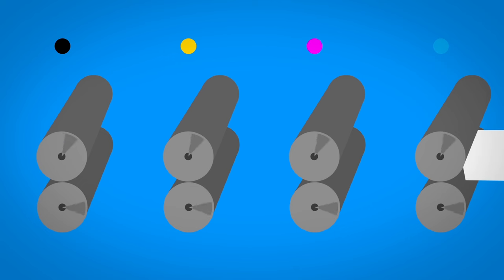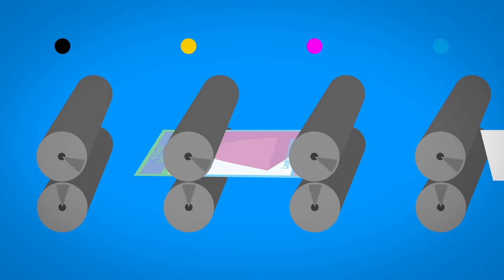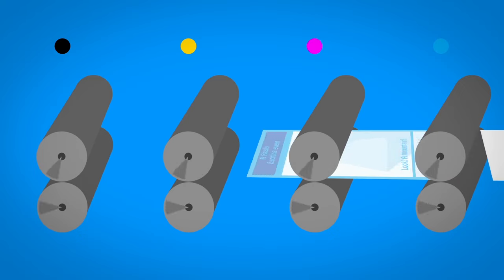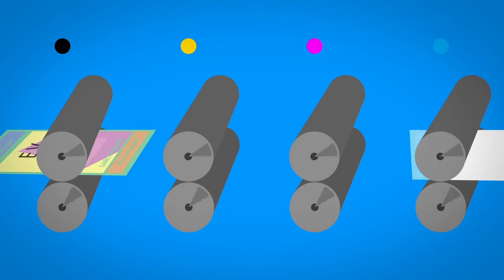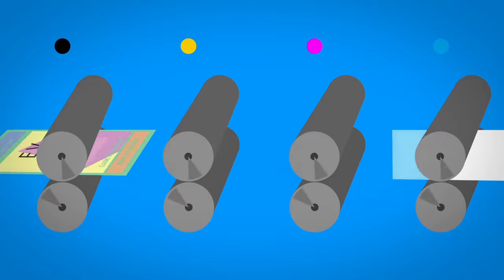CMYK works by starting with a lighter page, usually white, and then layering each colour together until the final image is produced. This image is made up of tiny dots of either cyan, magenta, yellow or black.